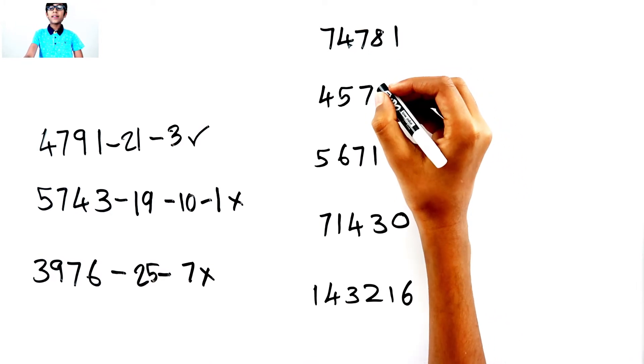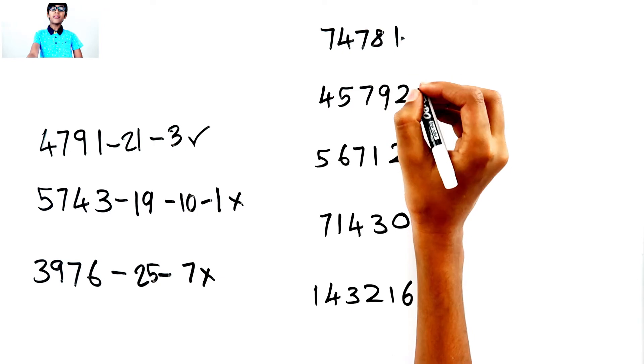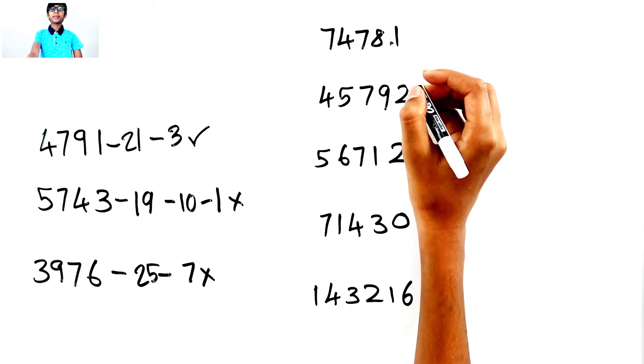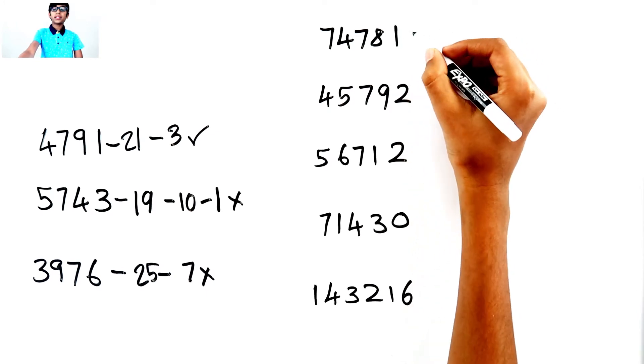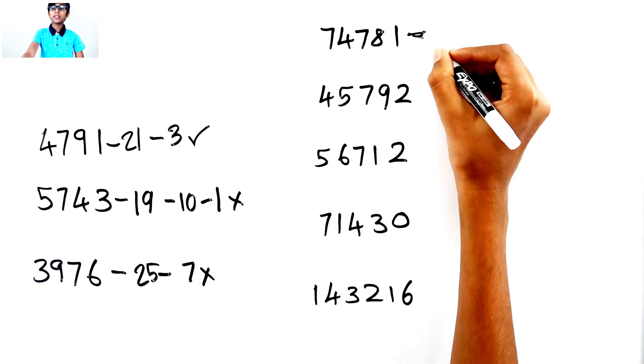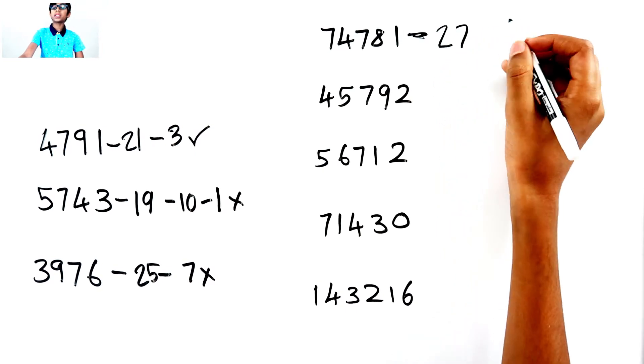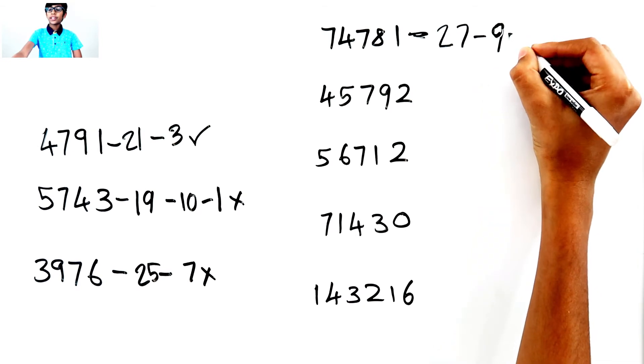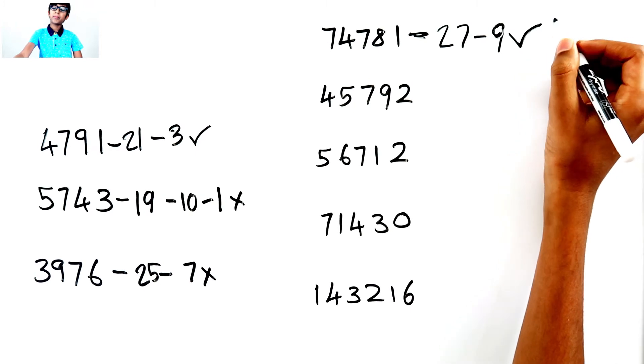7 plus 4. 11. 11 plus 7. 18. 18 plus 8. 26 plus 1. 27. So, 27. 2 plus 7 equals 9. Which can be divided by 3.